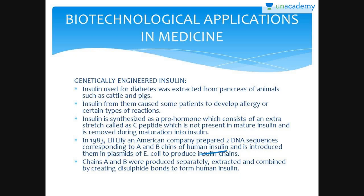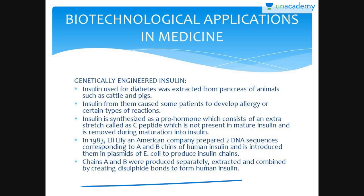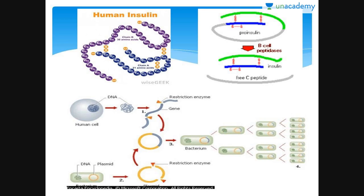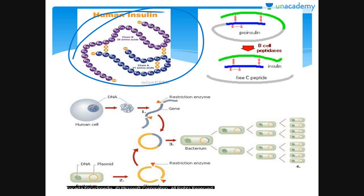The A and B chain sequences were introduced into the plasmids of E. coli to produce insulin chains. Both chains were produced separately, extracted, and combined by creating disulfide bonds to form human insulin. This is what the structure of human insulin looks like.